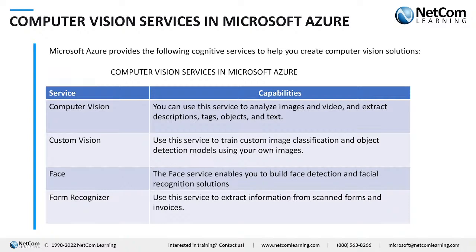Next is Custom Vision, where you train a custom image classification model using multiple images. For example, if you want to create a model that identifies cats, you feed it images of cats and occasionally dogs so it learns to differentiate. This is a rudimentary example — you can extrapolate this to do major things with your data, such as identifying counterfeit transactions on a bank server. Next is Facial Recognition — you can create facial detection and recognition solutions for security. A recent example is iOS allowing facial detection even while wearing a mask.